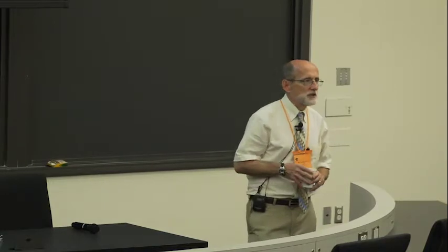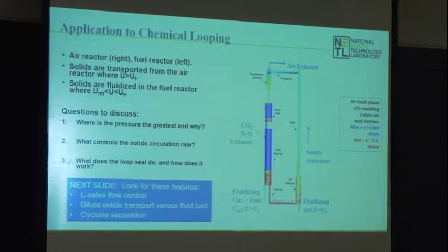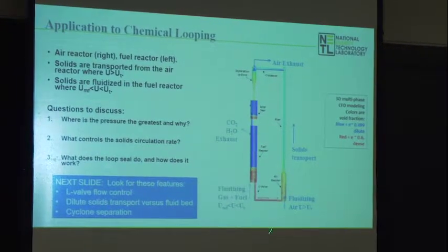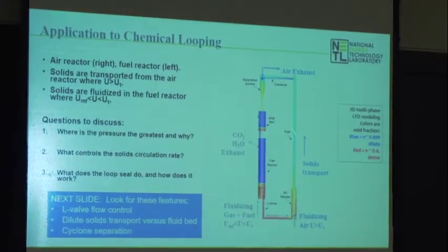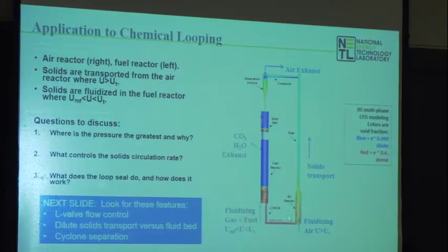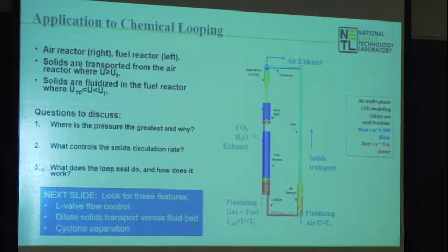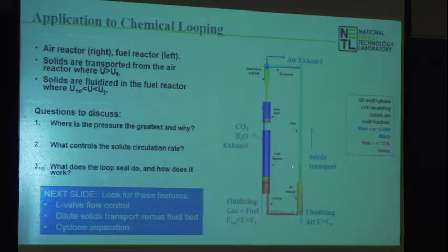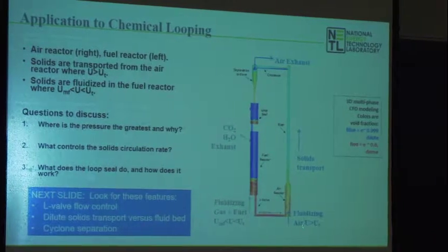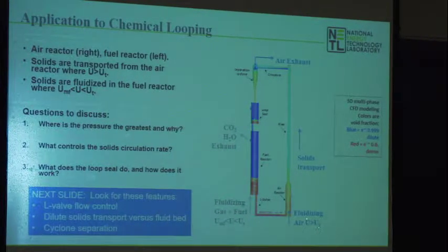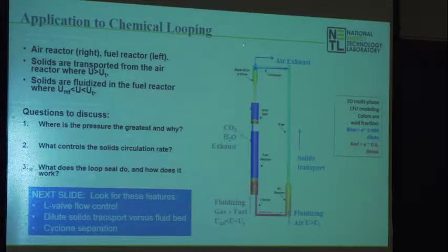Let's jump back into fluidization. On the screen is a CFD simulation of the chemical looping reactor we run in our laboratory — it's about 15 feet tall. This is the air reactor, which has a slightly larger cross-sectional area and then necks down to transport solids up. The gas velocity is larger than the transport velocity in this region, so you have a very turbulent bed being pulled up, and when you neck down, you really accelerate the material.